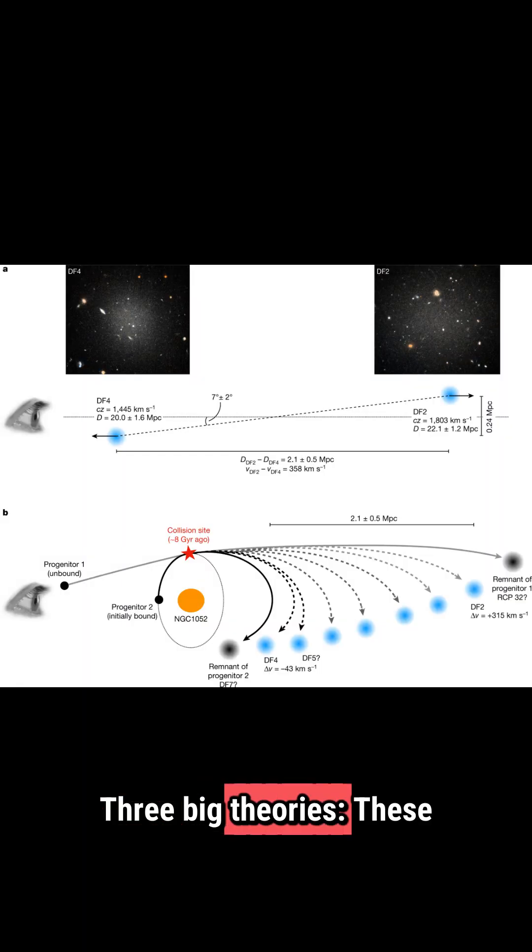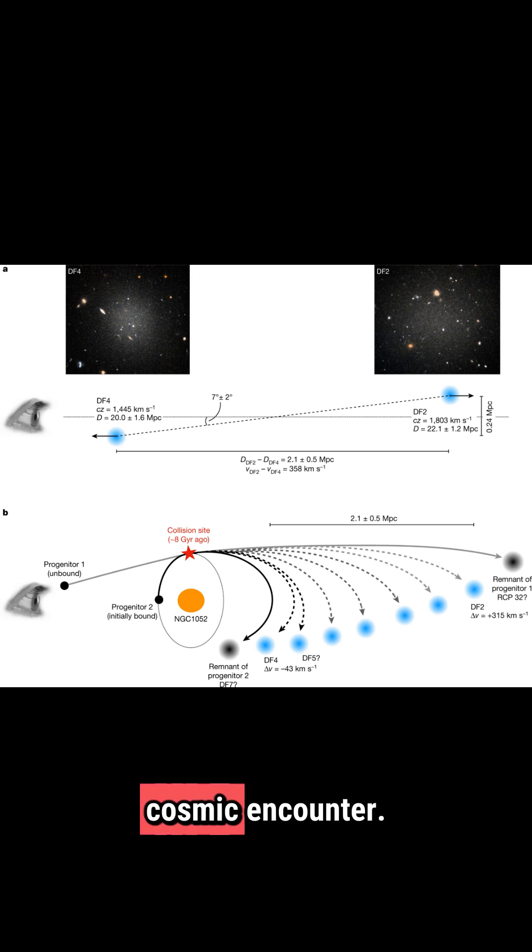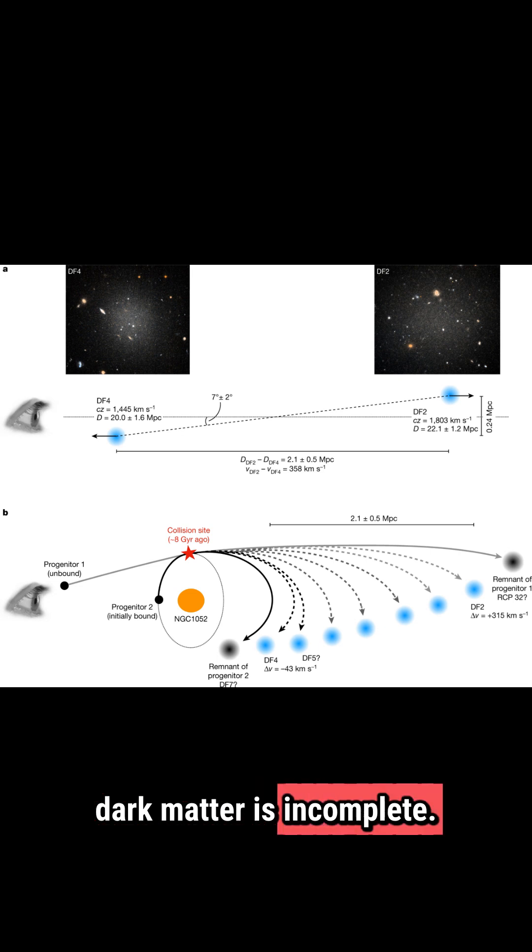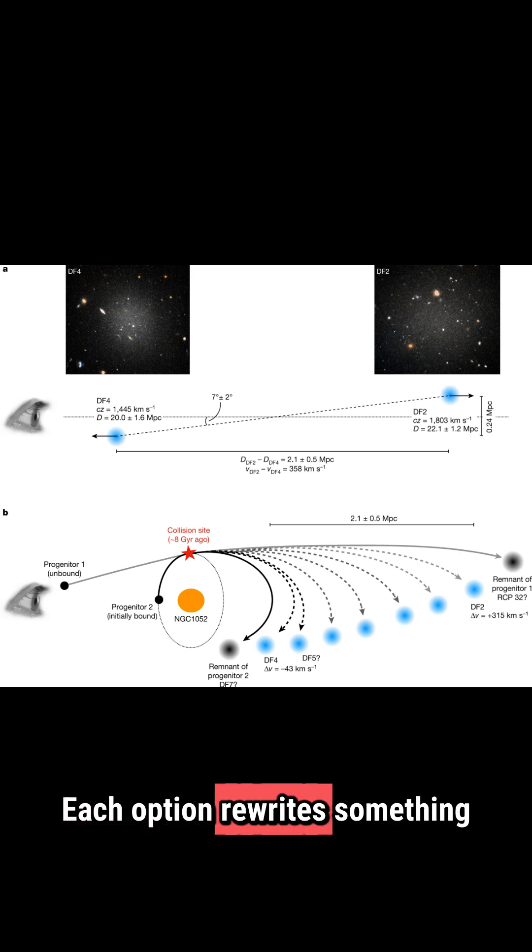Three big theories. These galaxies were born without dark matter. They lost their dark matter in a violent cosmic encounter. Or, our understanding of dark matter is incomplete. Each option rewrites something major.